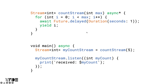Let's take a look at what a Dart stream is. In Dart, streams are created using the async generator function. A stream is a sequence of asynchronous data sets. Therefore, to create a stream, you need a tool that can create a function that generates data asynchronously.